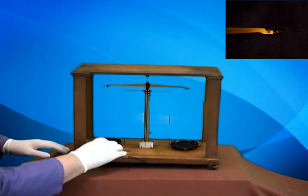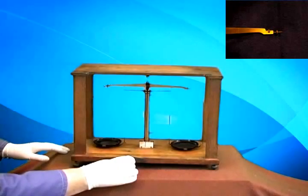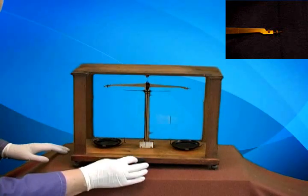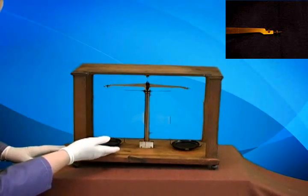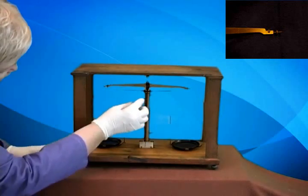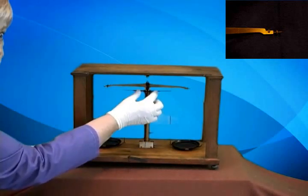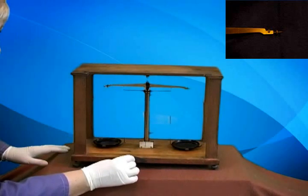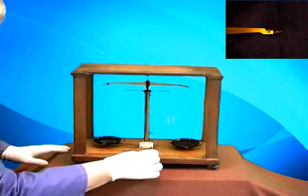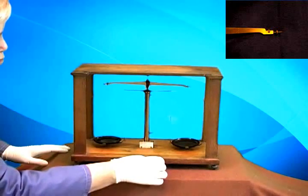Now, how did they keep the pans from swinging? They used a dampening device right here. And this dampening device allowed the pans to sit on the bottom. And then when they were ready to weigh, they would lift the beam right here by moving this lever. Watch that beam come up. And then the pans would be free to swing.